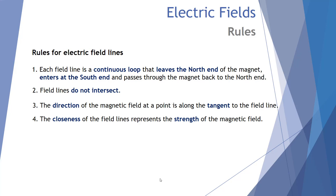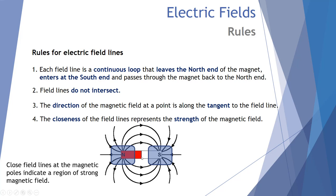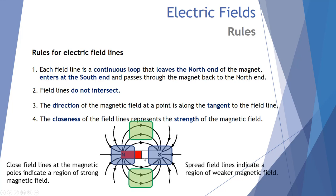The fourth rule: the closeness of the field lines represents the strength of the magnetic field. At the two poles, lines are densely drawn, indicating a strong region of magnetic field. At the far extremes, only a few field lines appear in the same area, so these spread-out field lines indicate a weaker region of magnetic field.